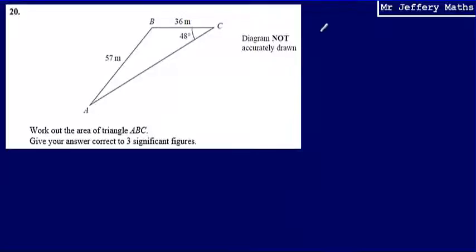So when I'm faced with this situation, a non-right angle triangle, what I'm going to need to use to work out the area of it is I'm going to have to use the formula half AB sine C.